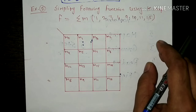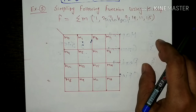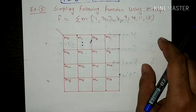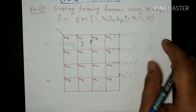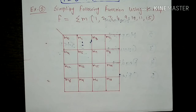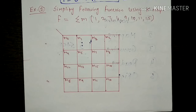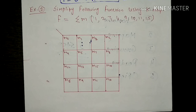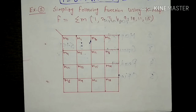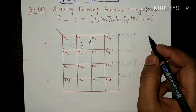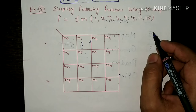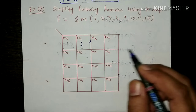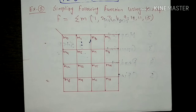So guys, again with the help of our five step rule or five step procedure we can perform this simplification. So according to these five steps, step number one is the charting. Charting means identify the number of variables and draw the chart of KMAP.